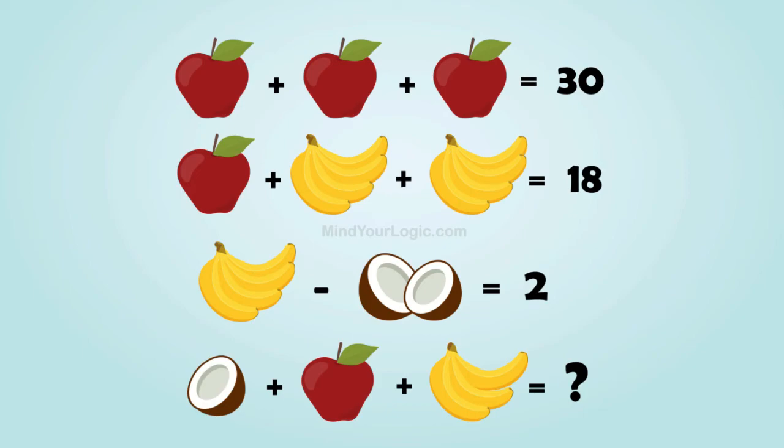Here is the math puzzle, in which coconut, an apple, and bananas are given in equation form. Solve the equation and find the individual value of them, which helps you to decode the final equation.